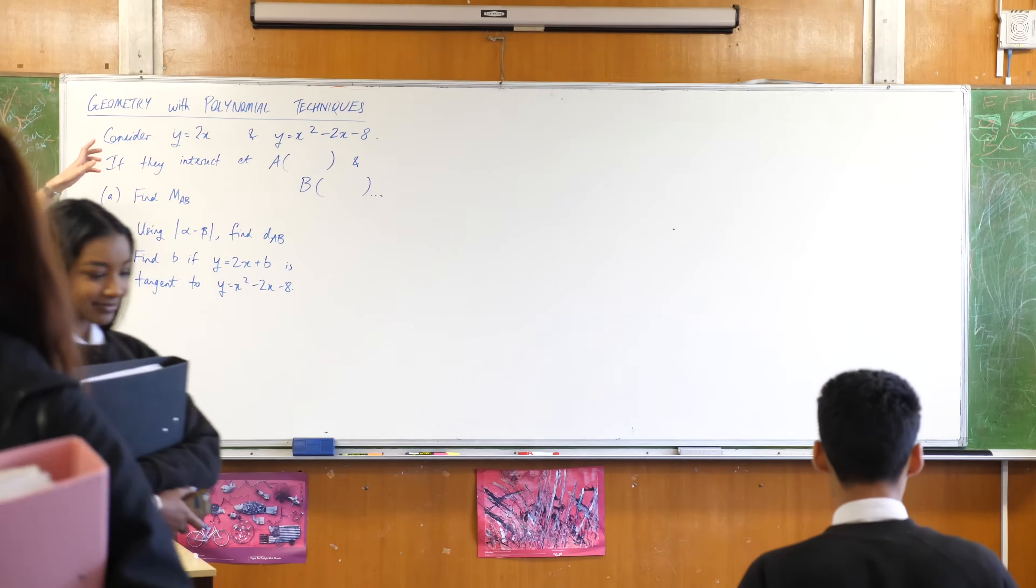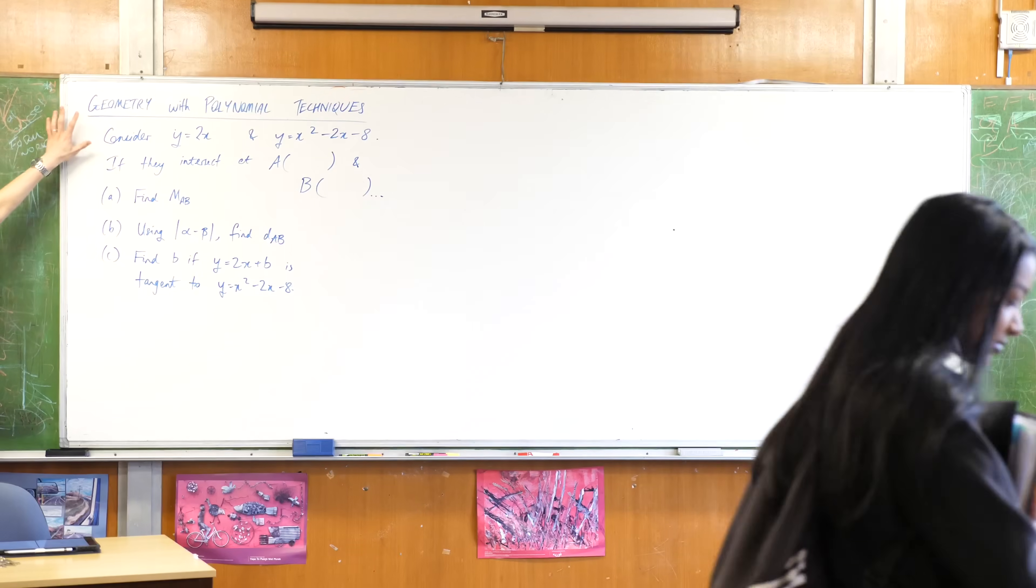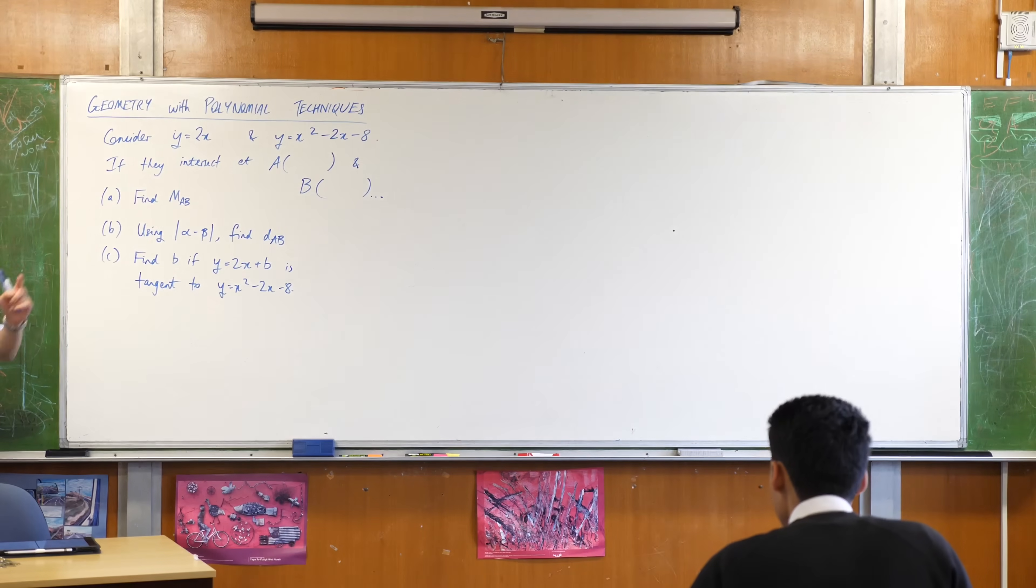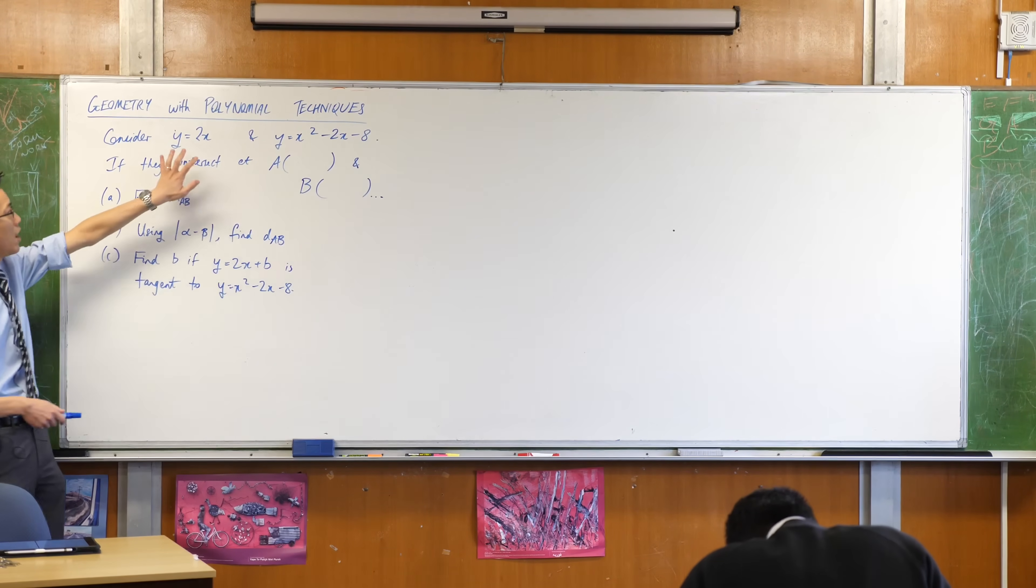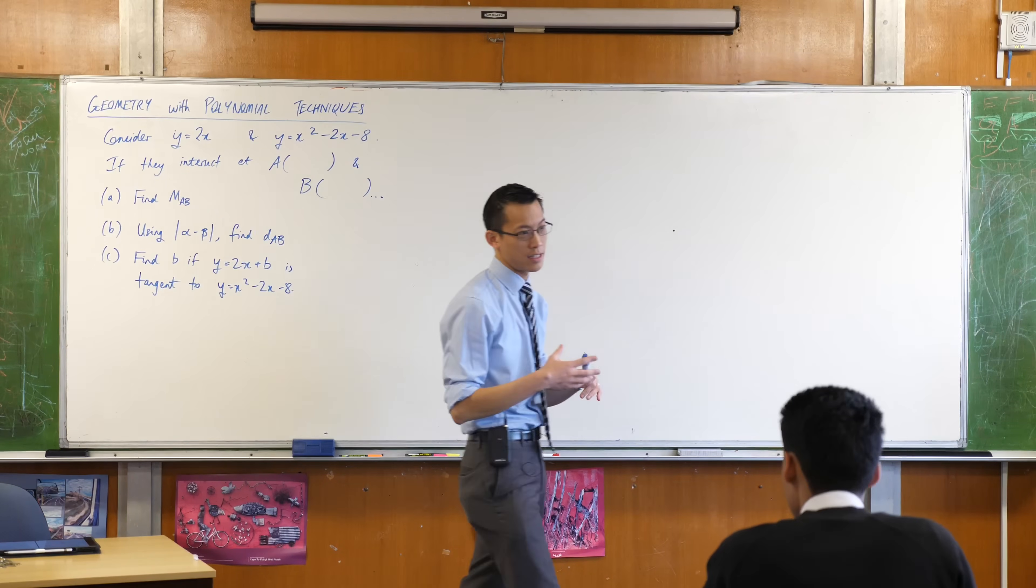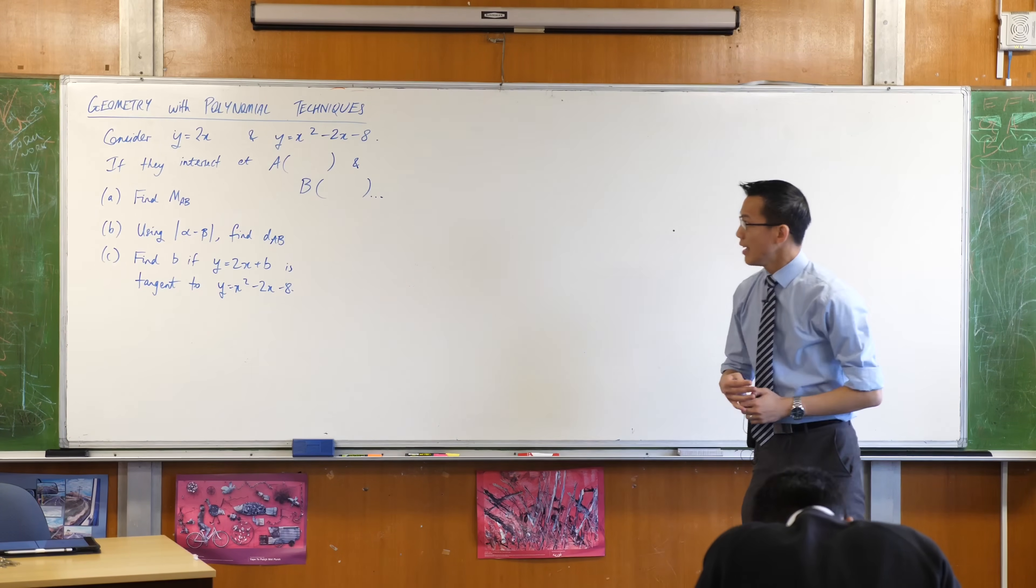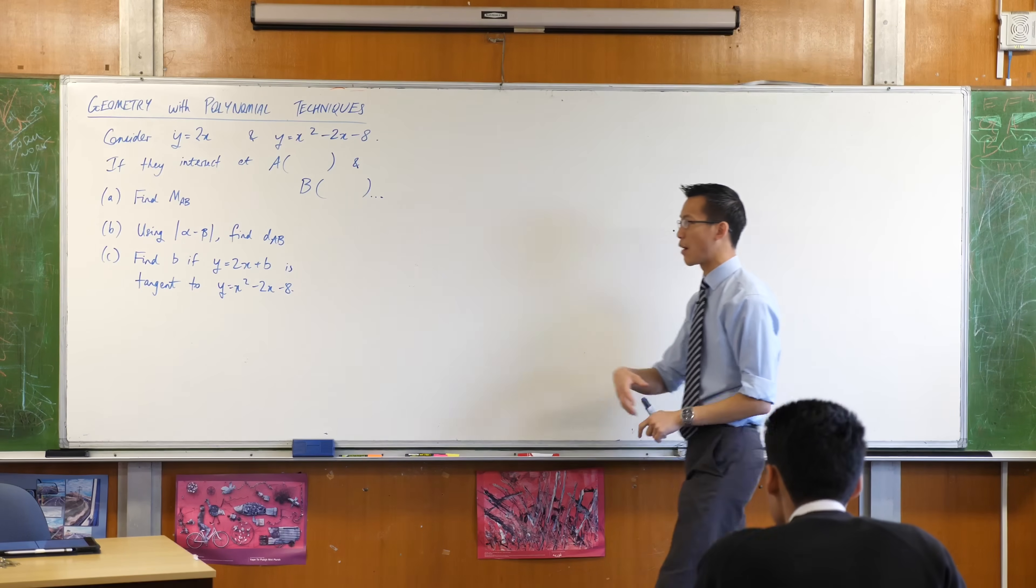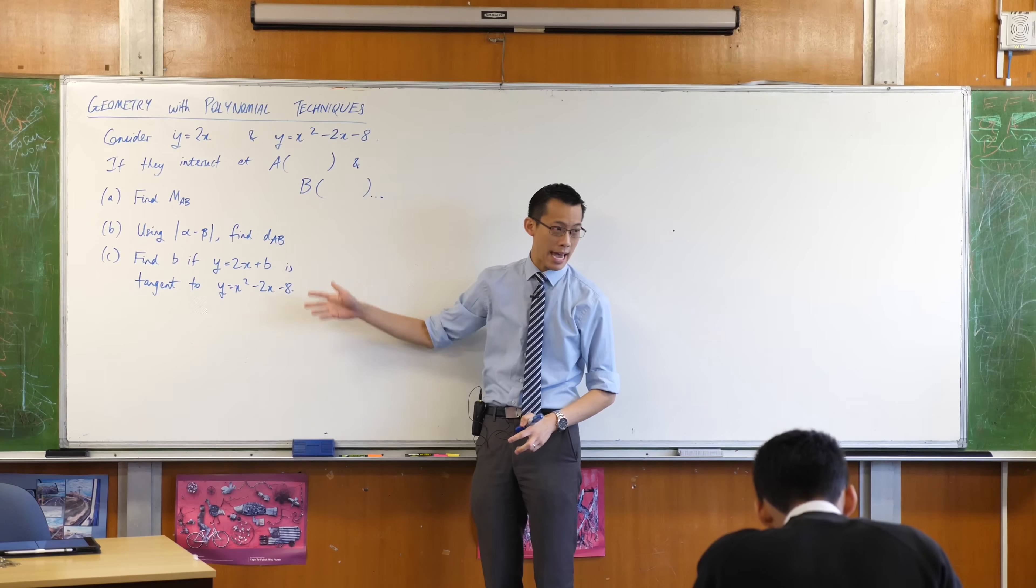Let's quickly look at the setup. You've got a straight line and a parabola, and we're told they intersect at a couple of points. If we name those points of intersection A and B, can we find all these things that relate to A and B?